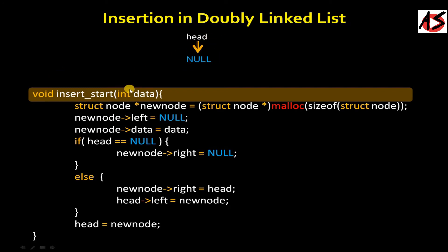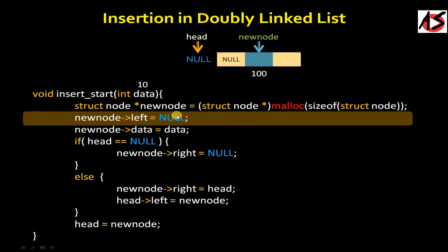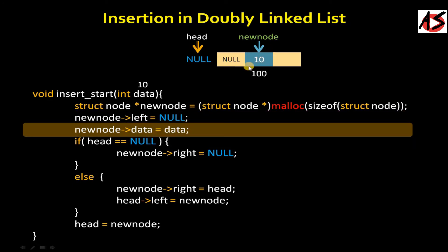Now we call the insert_start function to add a node from the front. Taking data as 10 and executing the next instructions: we create the new node with the malloc function — here you can see the new node is created with address 100. Then we set new node left equal to null because we are inserting at the front, so the left pointer is always null. Then we set the data part to 10.